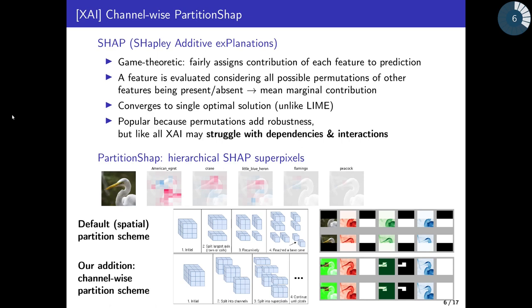These methods are based on SHAP, which is an XAI technique based on cooperative game theory to assign features their contribution to the model prediction while meeting certain fairness guarantees. The contribution is calculated not simply by comparing output with and without masking the feature, but doing so repeatedly while masking other groups of features. Because it rests on more principled theory than many similar techniques, SHAP has become very popular, but it can still struggle with the correlations and interactions we expect to see in more complex CNNs.